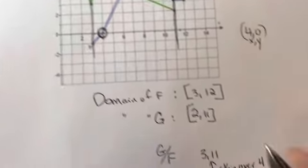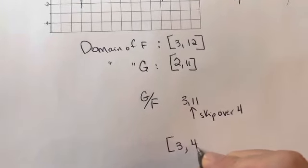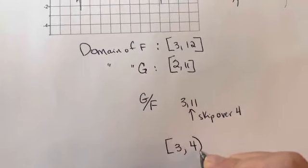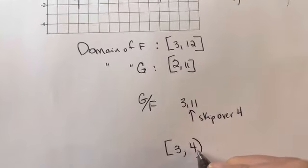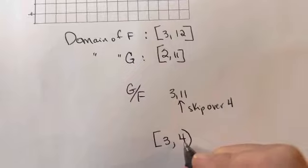So what that's going to look like is I'm going to start at 3. I can use 3. I'm going to get to 4. I can't use 4. So I'm going to use a parenthesis. That tells me I can get really close to 4, like 3.999999. Just can't use 4.